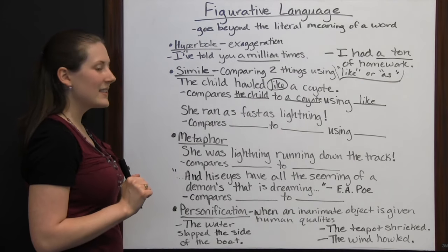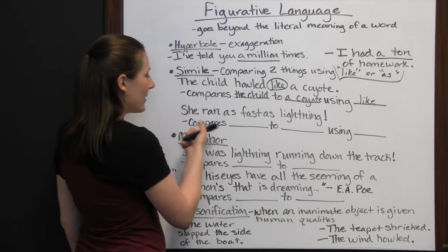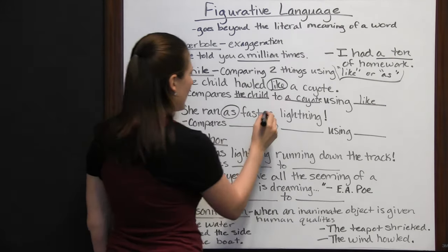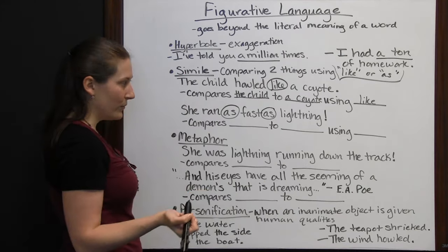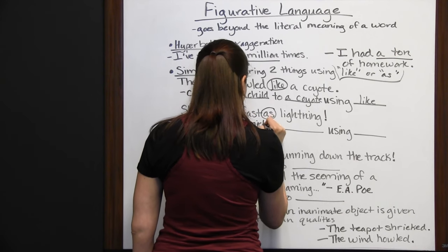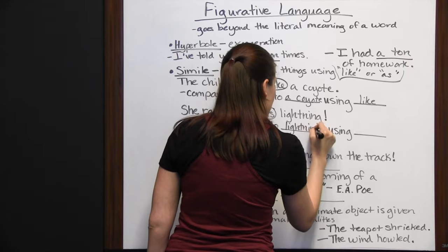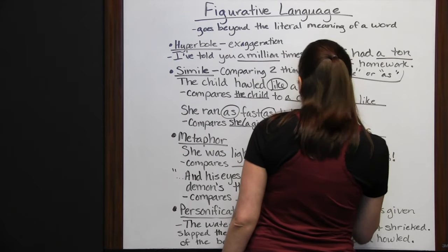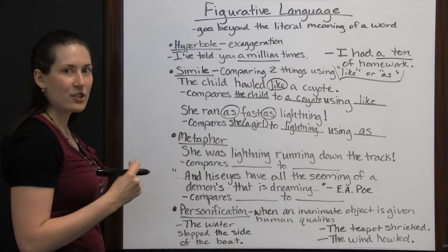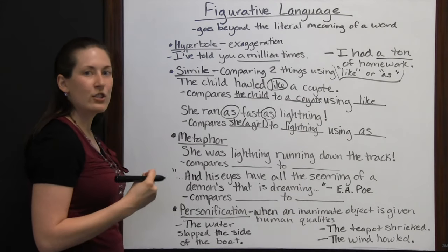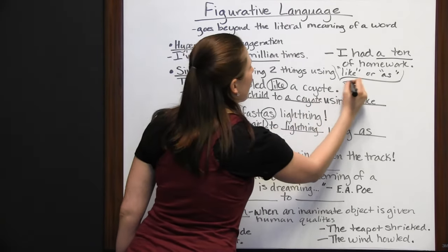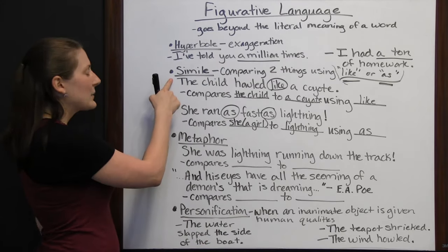Another example: 'She ran as fast as lightning.' That's going to compare two things using the word 'as.' It's comparing she, or a girl, to lightning — saying she's that fast, so fast you barely got to see her. That's what simile is: comparing two things using 'like' or 'as.' These are the important words to look for to make it actually be a simile.